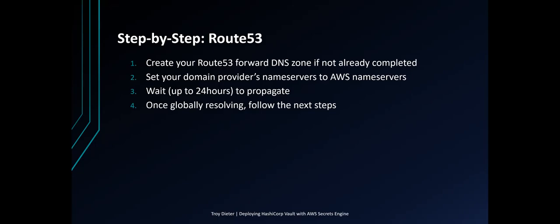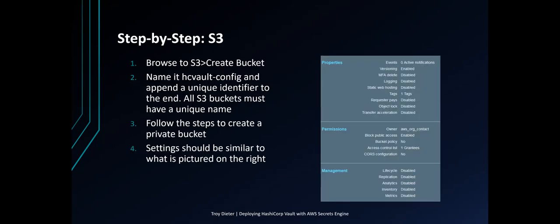The first step is in Route 53 — you'll want to create your Route 53 DNS zone if not already completed. Point your DNS and domain provider's name servers to the AWS name servers that will be provided once you've created the Route 53 forward zone. You'll want to wait up to 24 hours for it to propagate globally before completing the next steps.